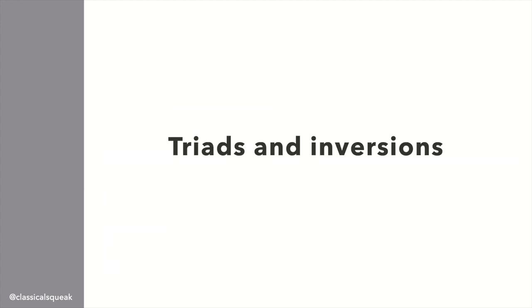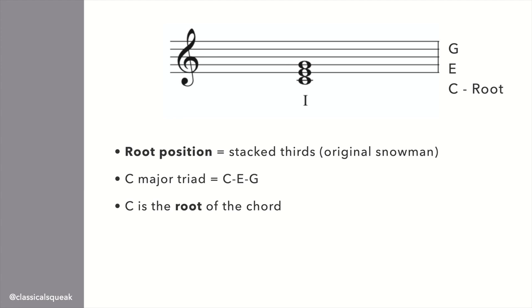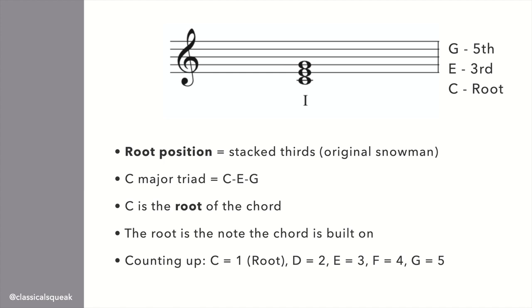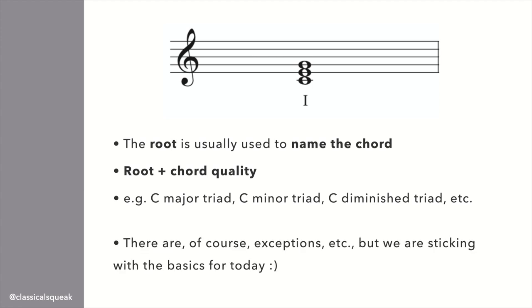This is a whole topic by itself, so we're going to go back to talking about chords. Starting with triads and inversions. Let's take this one chord which is in root position. For root position, this is our original snowman for a C major triad. We build a regular triad stacked in thirds of C, E, G. The C is the root of the chord, which is the bottom note in this case, and this is the note the chord is built on. E would be the third, which is the middle, and G would be the fifth, which is on top. Think of it as counting from one through five. The root is normally how we name the specific chord. So C major, C minor, C diminished, etc. And typically build it by stacking thirds as we've already seen. There are, of course, exceptions and alterations, but we're sticking with the basic triad for today.